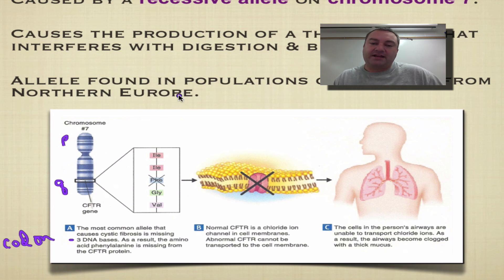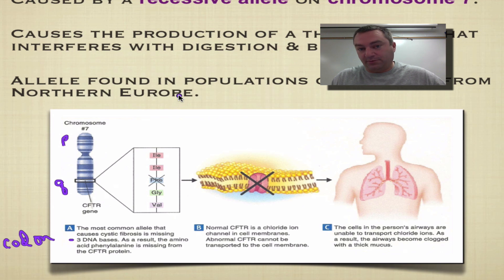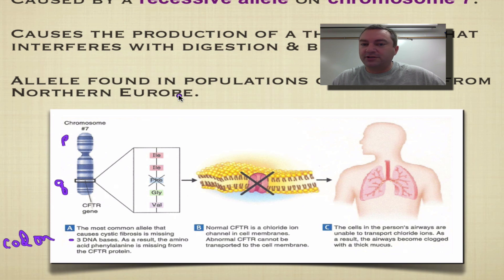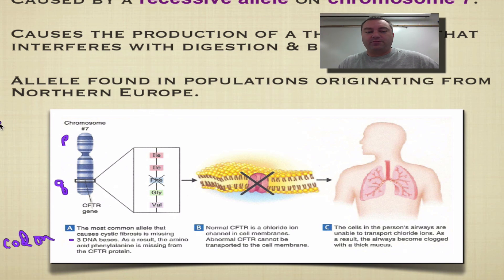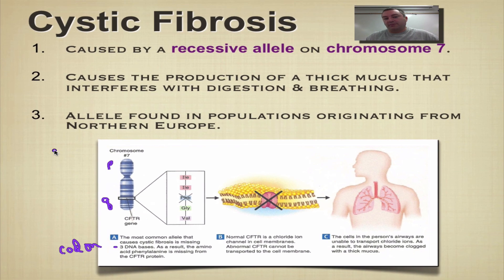There has been a ton of advances in medicine over the last 20 years, and we've effectively doubled the lifespan of people with cystic fibrosis. You used to have a hard time living to 20, and now they can go into their 30s and maybe early 40s. This allele is found in populations that originate from Northern Europe, so most Americans of European descent — we would find this allele in a number of American families.